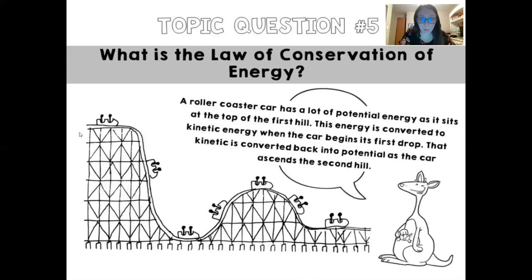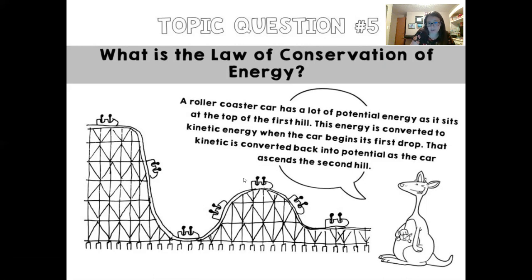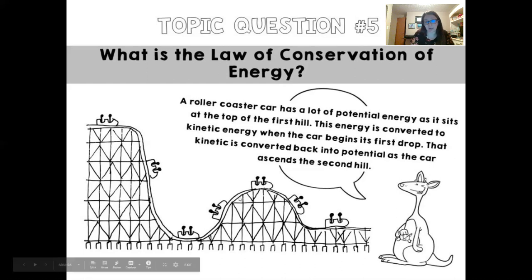Here's an example using a roller coaster. A roller coaster car has a lot of potential energy at the top of the first hill. This energy is converted to kinetic energy as the car begins to descend. At the bottom, kinetic energy converts back to potential energy as it ascends the second hill — increasing potential energy while decreasing kinetic energy. At the top of the second hill it has the most potential energy, then again decreases potential energy and gains kinetic energy as it picks up speed.